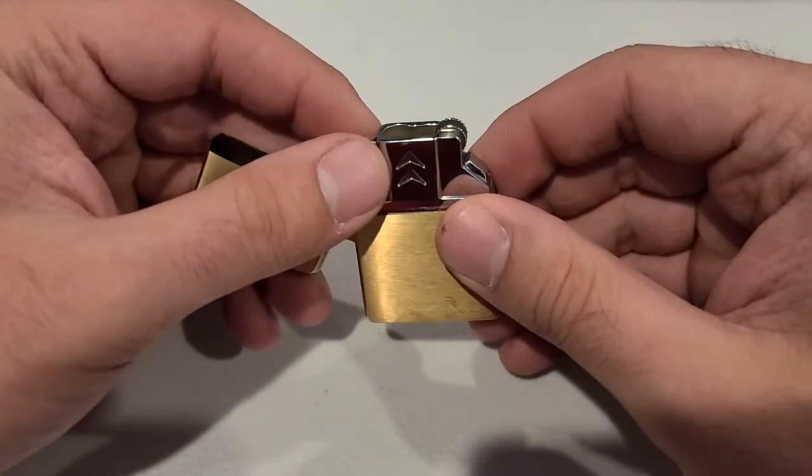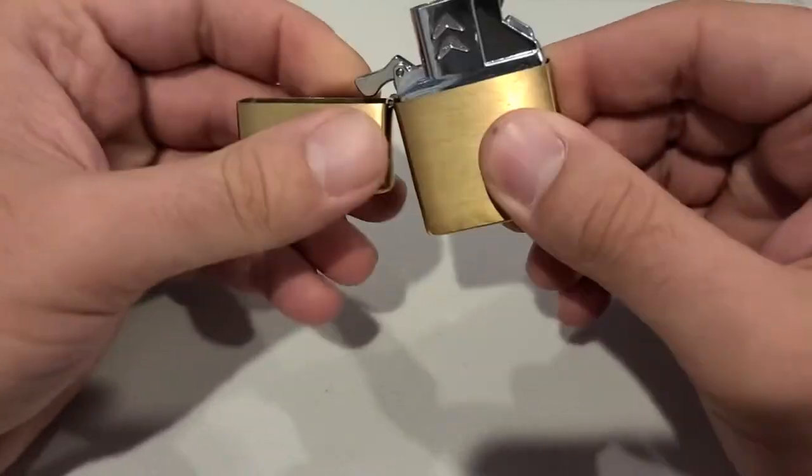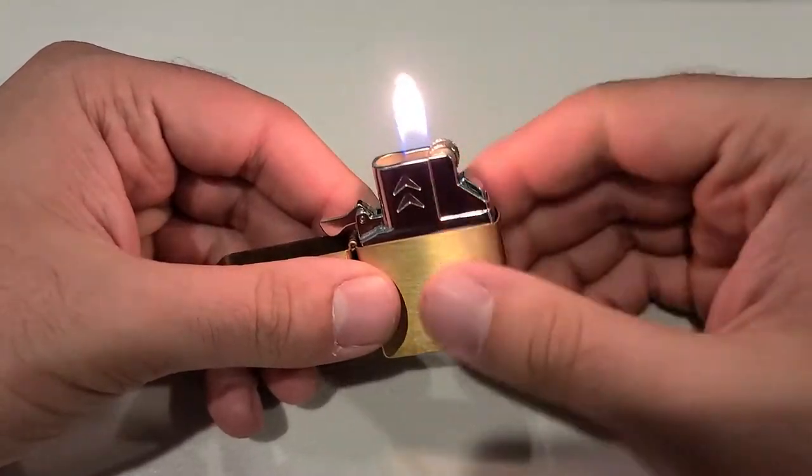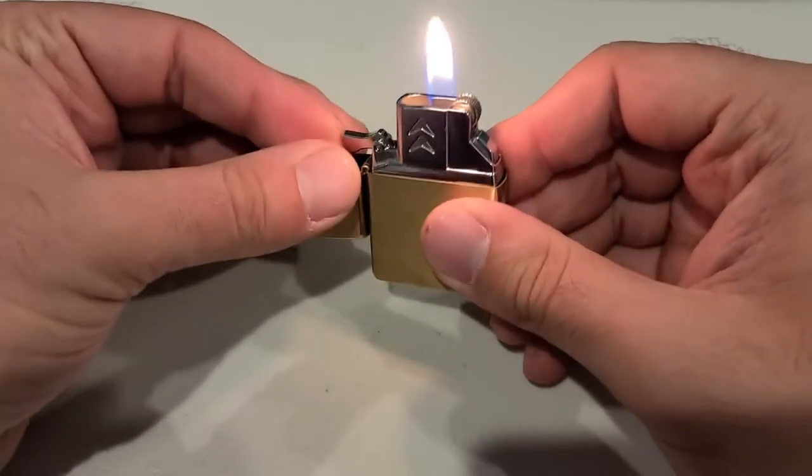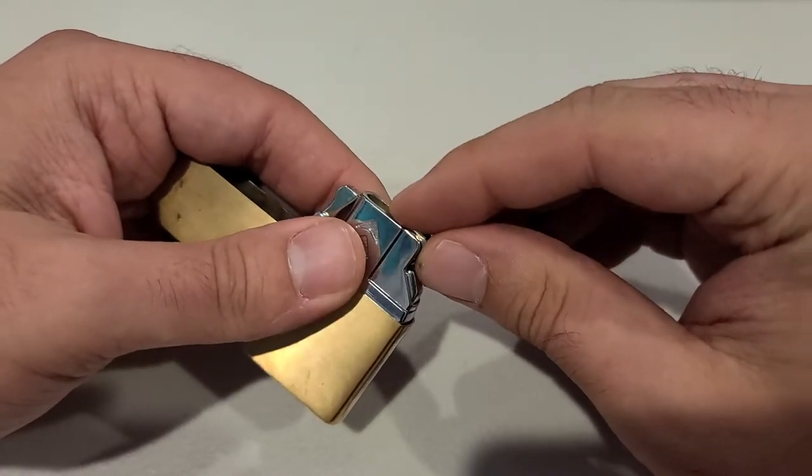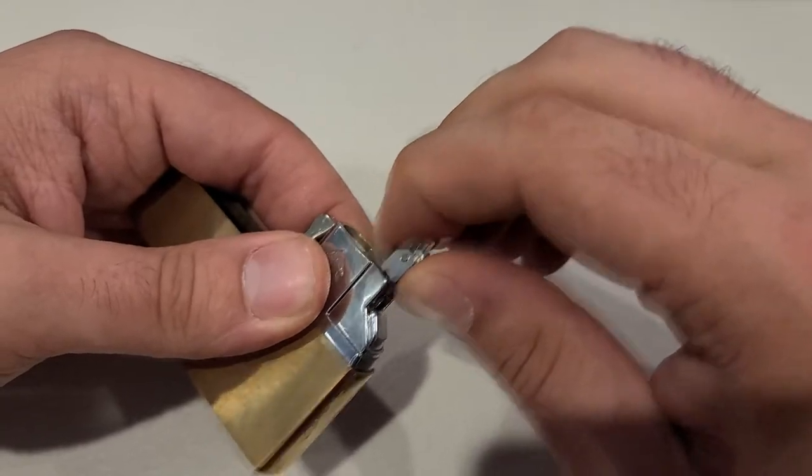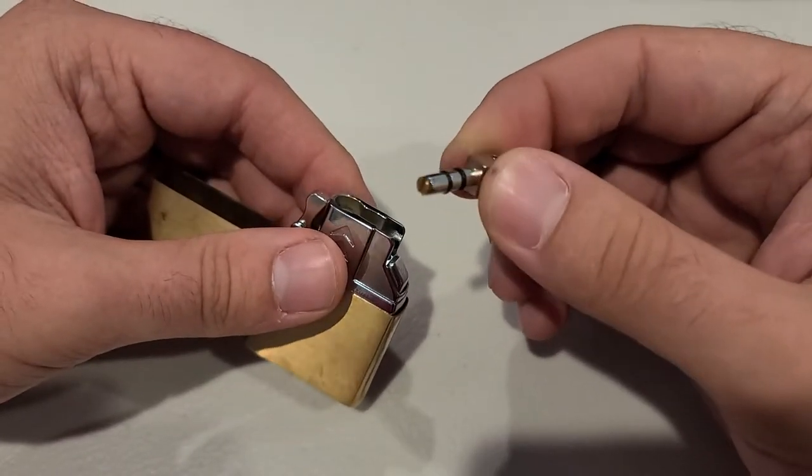And that is how to change the flint. Now when you open this lighter it's letting the fuel out, so I just close the valve. What you need to do is grab this part here and pull, and this mechanism comes right out. Right down here there's a screw.